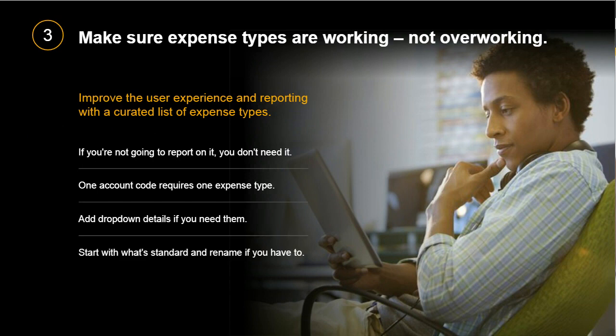Our next topic is expense types, and this is where we often see customers overthink and over-complicate things. By using standard expense types in conjunction with a corporate card feed, you'll make creating expense reports easier for users to complete. More expense types does not necessarily mean more clarity — if users have 200 expense types to sort through, they're more likely to make mistakes. If users have fewer expense types, the process becomes more straightforward and reporting gets easier for you as well.